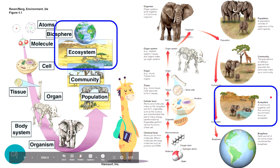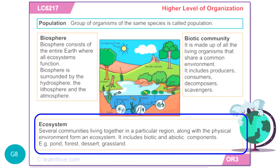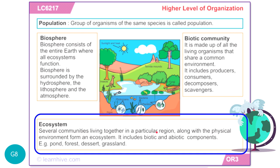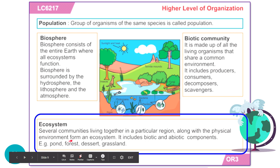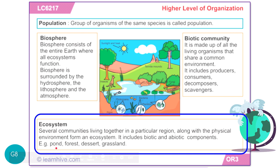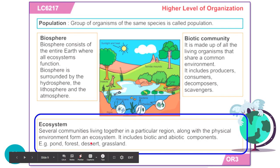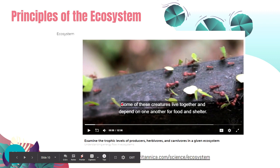Another definition of ecosystem as a higher level of organization: several communities living together in a particular region along with the physical environment. This includes biotic and abiotic components, and examples would be a pond, forest, desert, and grassland. This definition is from Britannica.com.